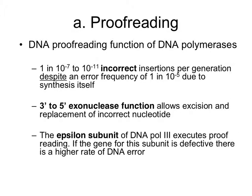DNA proofreading is a function of many DNA polymerase enzymes. There are about 1 in 10⁷ to 1 in 10¹¹ incorrect insertions of nucleotides per round of DNA synthesis, despite an error frequency of 1 in 10⁵. The synthesis machinery makes about 1 error per 10,000 nucleotides, but after proofreading we have fewer than 1 in 10 million errors — demonstrating really good proofreading function in most DNA polymerase systems.